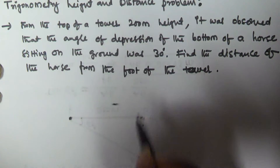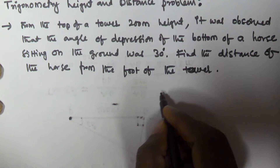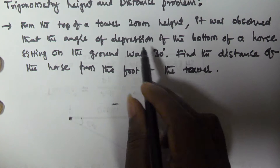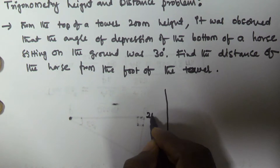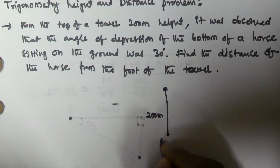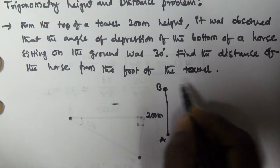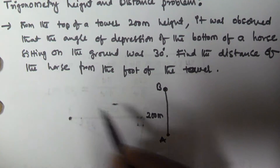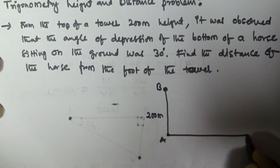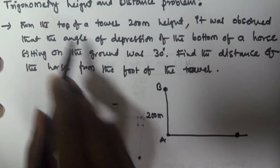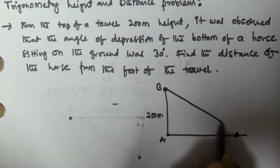Find the distance of the horse from the foot of the tower. So from the top of the tower, the height is 200 meters. Assuming the tower is AB — this is the ground, and the horse is sitting here on the ground.